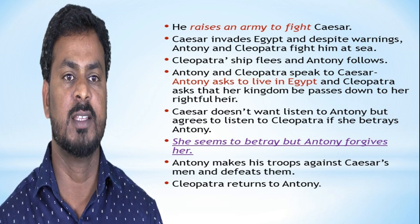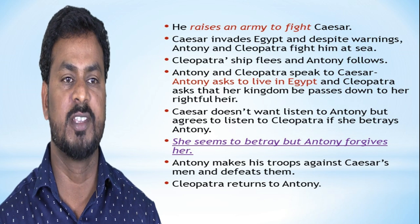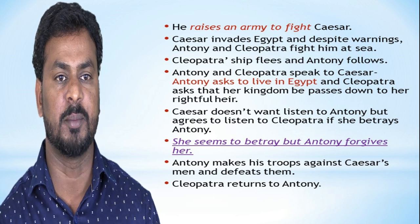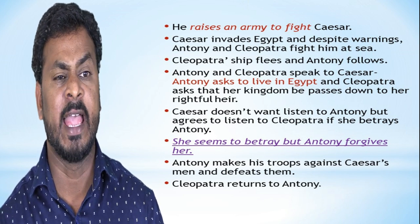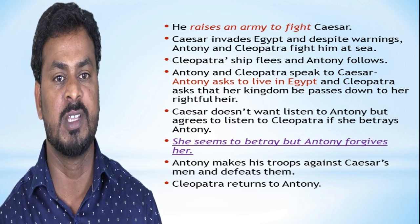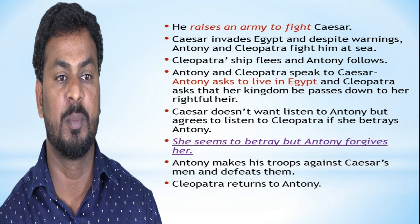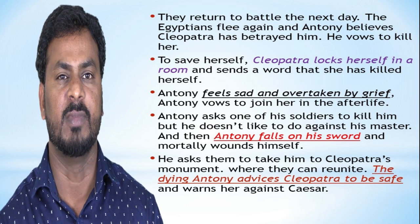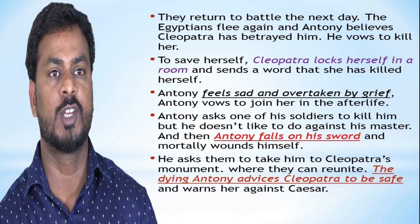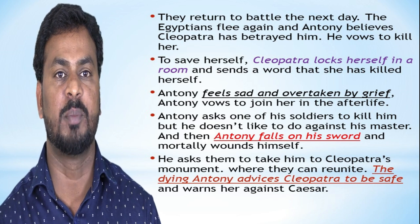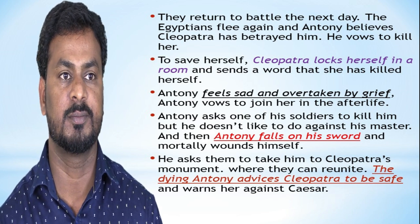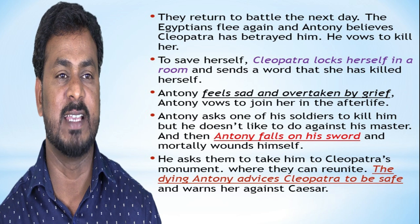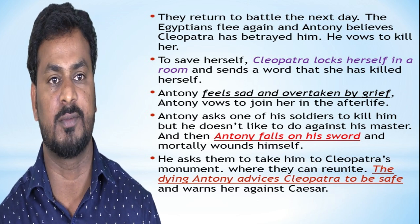Caesar refuses to listen to Antony but agrees to listen to Cleopatra if she betrays Antony. She seems to betray him, but Antony accuses her. Antony turns his troops against Cleopatra, but she sends men and defeats them. Cleopatra returns to Antony. They return to battle the next day. The Egyptians again flee against Antony, and Antony believes Cleopatra has betrayed him. He wants to kill her. To save herself, Cleopatra locks herself in a room and sends word that she has killed herself.